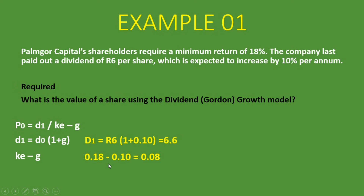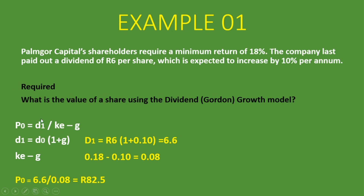Remember to always put the denominator as a decimal, not a percentage, because that's where students make mistakes on their calculators. So 18% equals 0.18 minus the growth rate of 0.10, giving us 0.08. We take D1, which is 6.6, and divide by KE minus G, which is 0.08. The answer is 82 rand 50 cents. So the value of the share using the dividend growth model is R82.50.